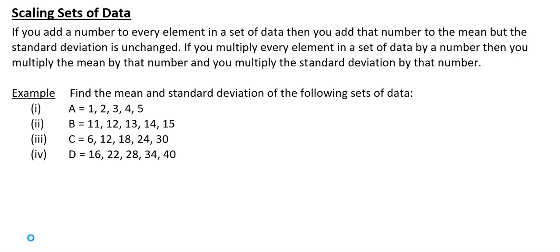Let's do a diagram to explain this. If I've got a number line with a few numbers on it — a number here, a number here, and a number here — they would have a certain mean, somewhere about here. Now if I took all of those numbers and added one to them, this first one would now be over here, the next one over here, and the last one over here. So the mean would just be shifted up by one — everything has been shifted up by one, so the mean will also just be shifted up by one.